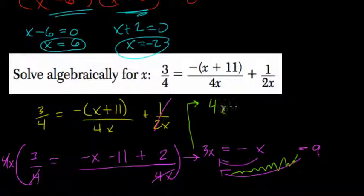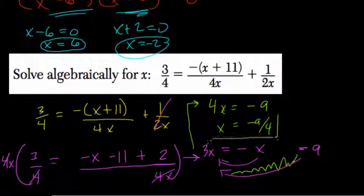So we get 4x equals negative 9. Divide both sides by 4, and x equals negative 9 over 4. And that's our answer.